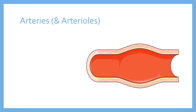Beginning with arteries — you'll note I've referred to arteries and arterioles. Arterioles are simply small arteries. As arteries split and branch off and get smaller, they become what are known as arterioles. In terms of structure, they're essentially the same as arteries — still carrying blood away from the heart, still mostly carrying oxygenated blood, and structured in the same way. So let's look at arteries and arterioles together.